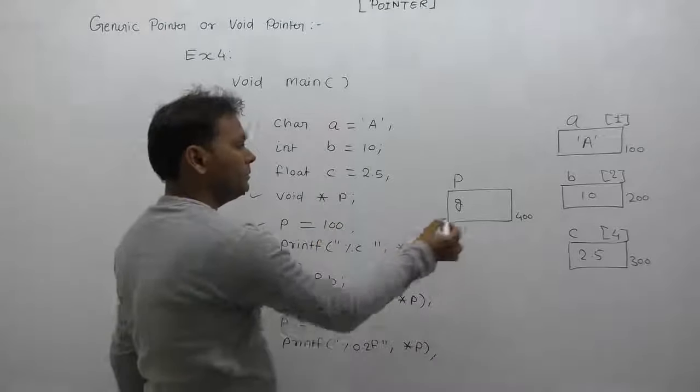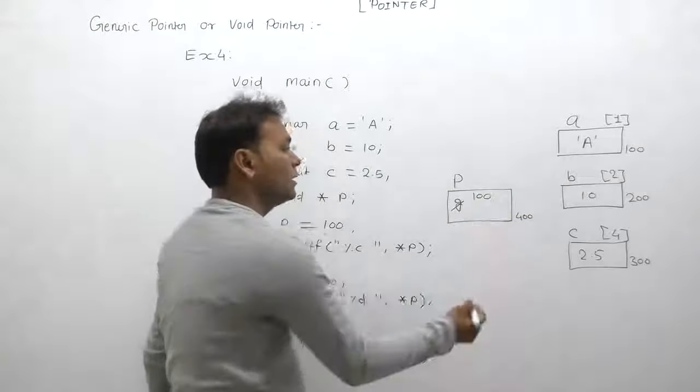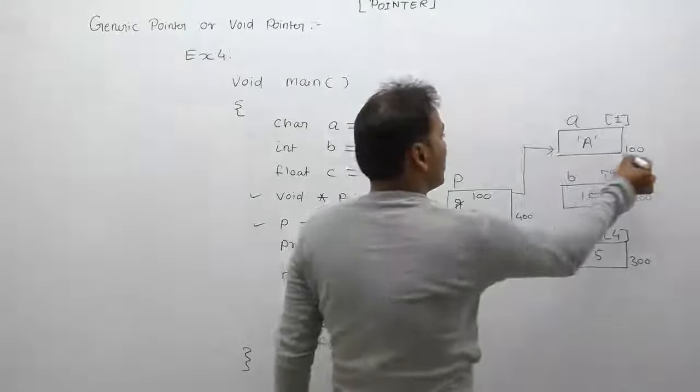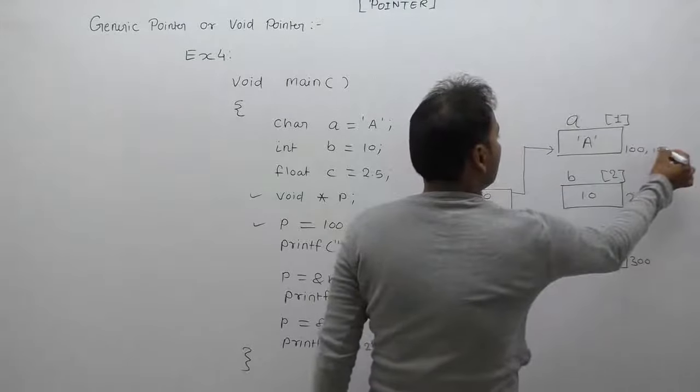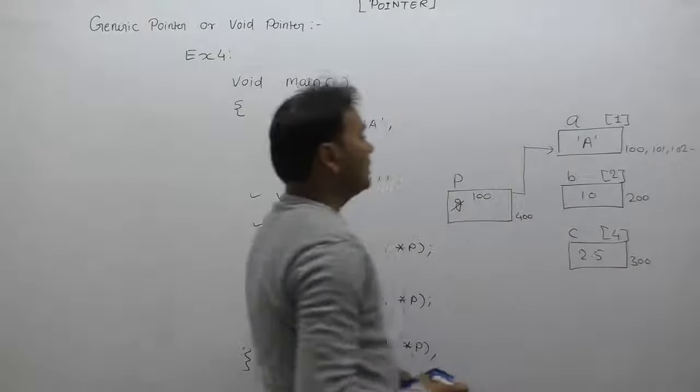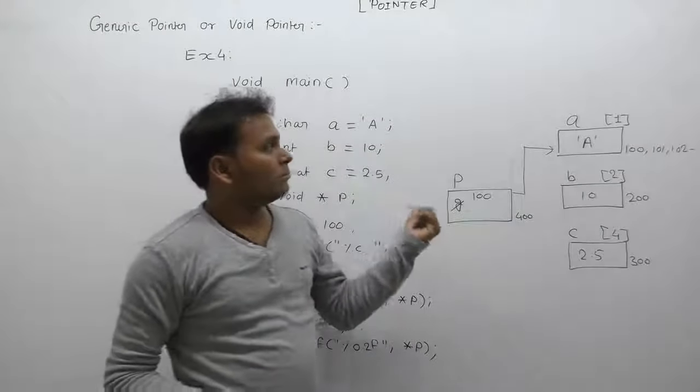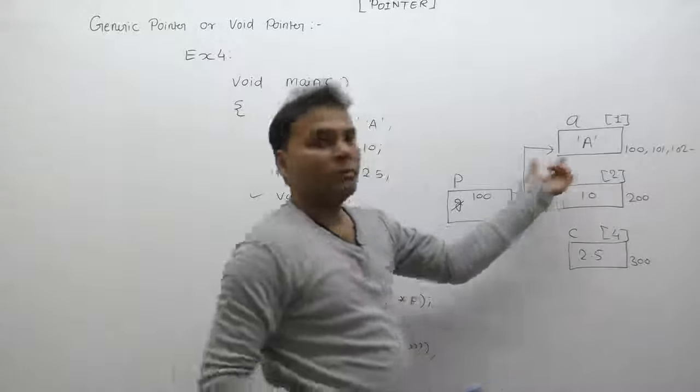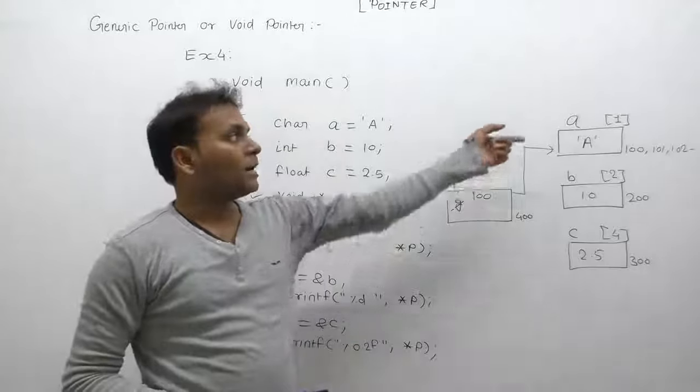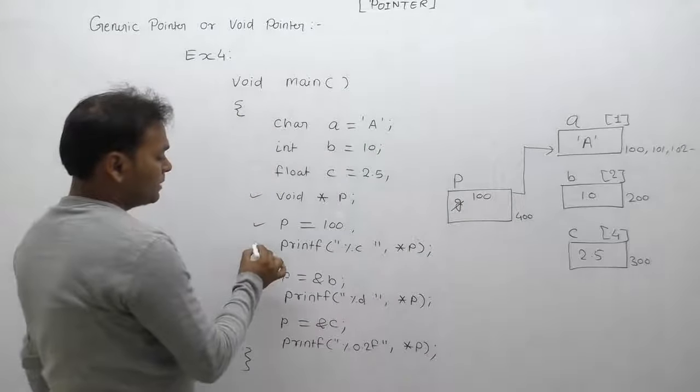As soon as p has 100 assigned, immediately p points to location 100. From 100 location onwards, other bytes are 101, 102, and so on. From 100 onwards, how many bytes? This kind of information is not available - how many bytes are pointed by p. In that case, therefore we cannot write star p. Star p is not possible here.